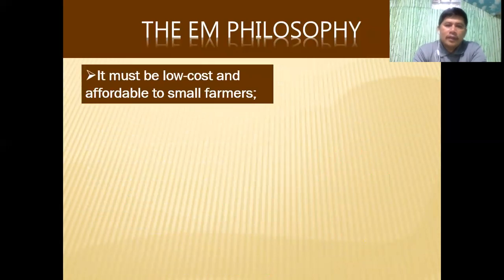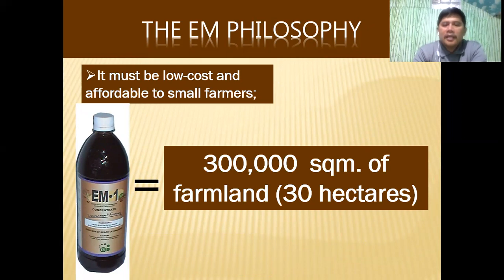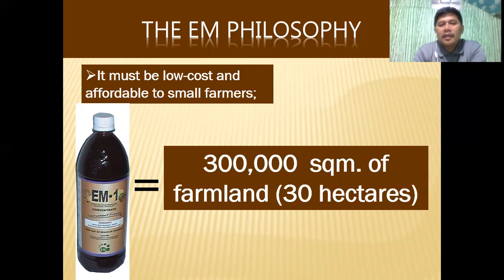In terms of EM philosophy, first and foremost it must be low cost and affordable to farmers. In fact, one liter of EM1 can actually be enough for a 30-hectare farmland, or 300,000 square meters — that's how affordable and low cost this EM technology is. In Kenya, EM1 costs only about 350 to 375 shillings per one liter, with one dollar being 100 shillings — so you can convert it into your own currency.